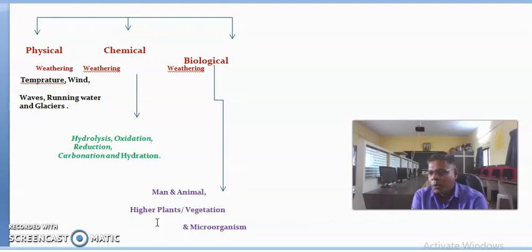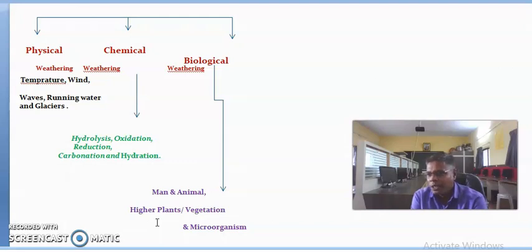Rabbits burrowing into the ground destroy soft rock. Ants and other dead bodies of animals provide substances that react with minerals and start the decaying process of that material. Earthworms pass the soil through their alimentary canal and thus bring about the weathering or crushing of soil by psychochemical action. So man and animals are also important for biological rock weathering.